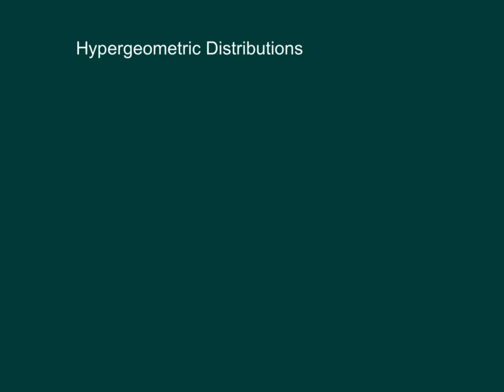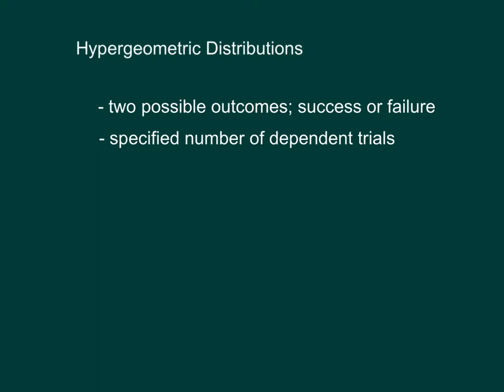Just like the binomial distribution, we have two possible outcomes in a hypergeometric distribution, success or failure. Also, the trials in this case are dependent. So this is the first time we're seeing a dependent outcome.